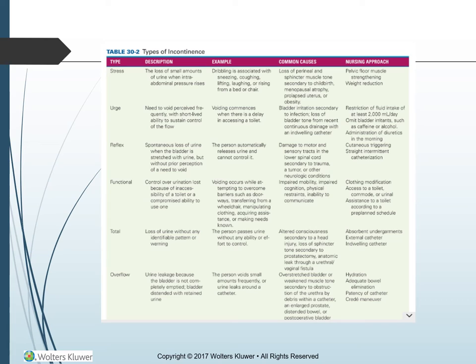Functional incontinence is loss of urinary control due to inaccessibility of a toilet or compromised ability to use one — voiding occurs while attempting to overcome barriers such as doorways, transferring from a wheelchair, manipulating clothing, acquiring assistance, or making needs known. Common causes: impaired mobility, impaired cognition, physical restraints, and inability to communicate. Nursing approach: clothing modification, access to a toilet or commode close by, and assistance to a toilet on a pre-planned schedule.